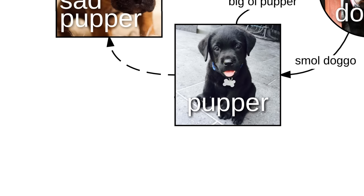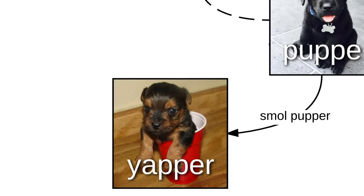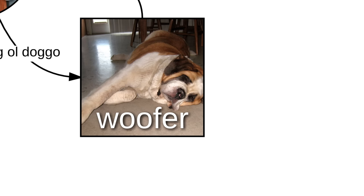And do not pet a snip-snap doggo. Sometimes a pupper is a real small pupper, and that's a yapper. But then it grows up to be a big ol' yapper, and that's a pupper.